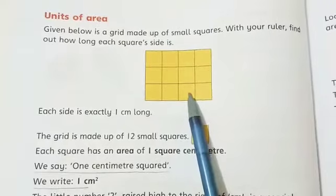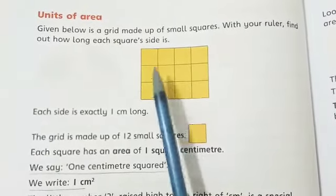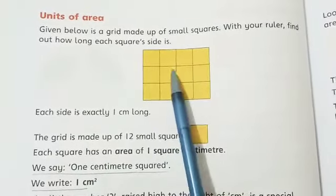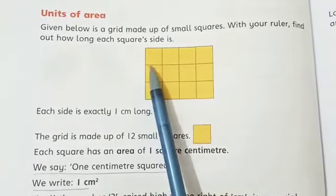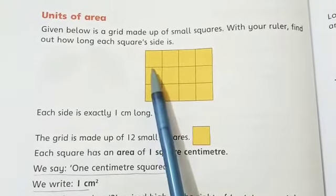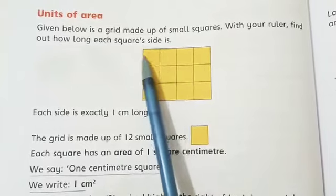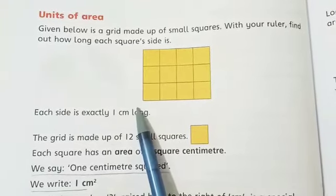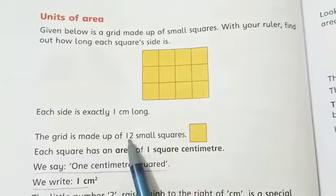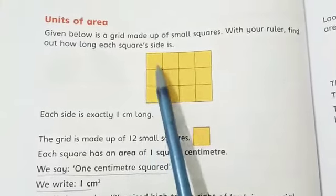Given below is a grid. This is a grid made up of small squares. You have to find out how long each square side is. Each square side is exactly one centimeter long.